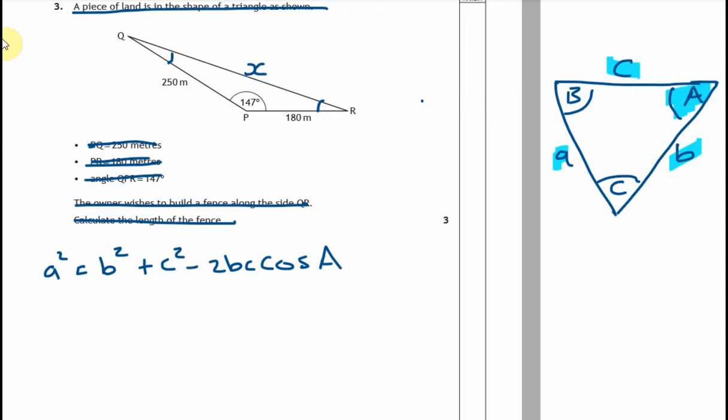Make that minus clear. So I'm just going to call B 250. It could be either. It doesn't matter if it's 250 or 180, but be consistent. a² = 250² + 180² - 2 times 250 times 180 times cos 147. And that is equal to a squared.